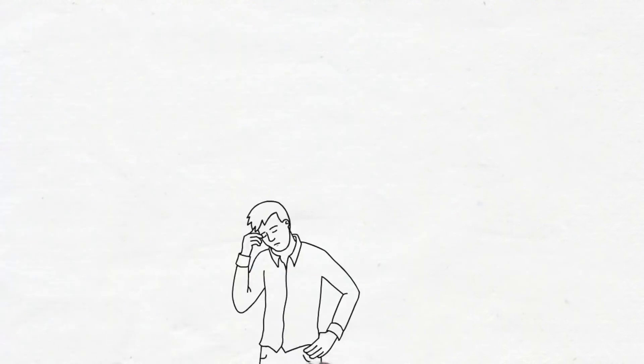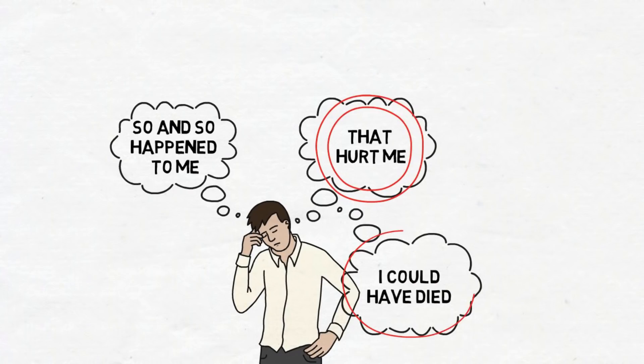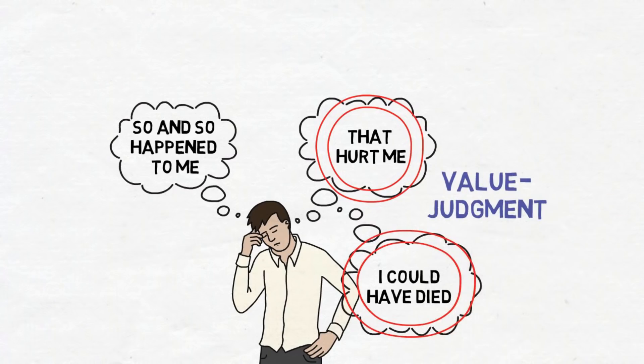When something bad happens to us, we say, so-and-so happened to me and that hurt me. And in this case, we would say, I could have died. The last part, that is, 'and that hurt me' or 'I could have died,' is the value judgment part. So when you remove the last part, you don't let the bad thing make an impact on you.